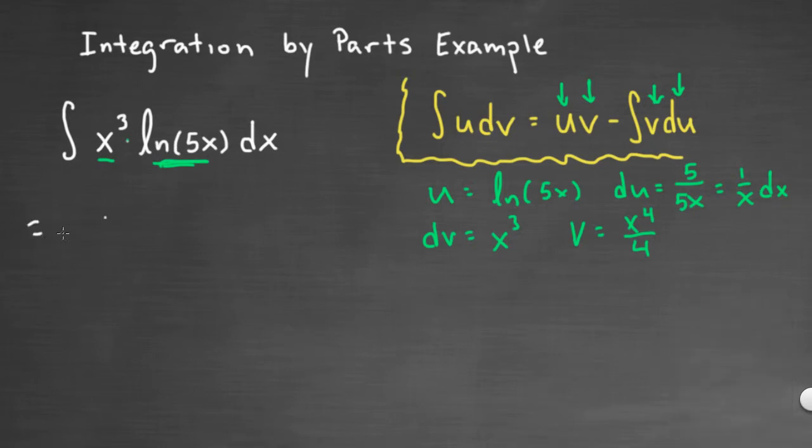Here's integration by parts. The integral of x cubed times the natural log of 5x would be u times v. So x to the 4th over 4 times the natural log of 5x, minus the integral of v du.